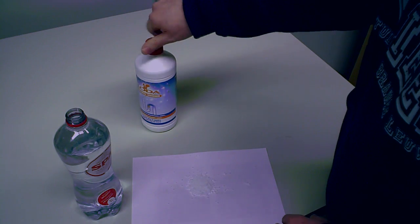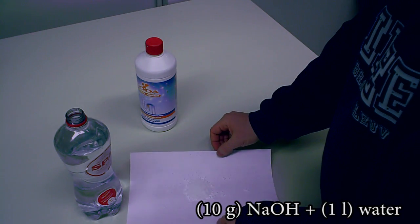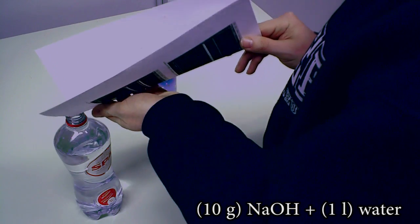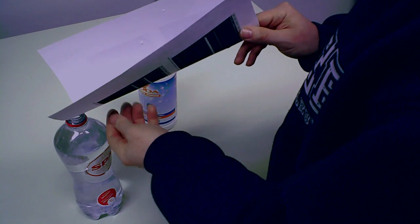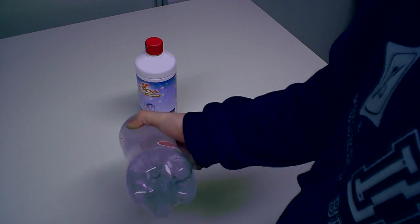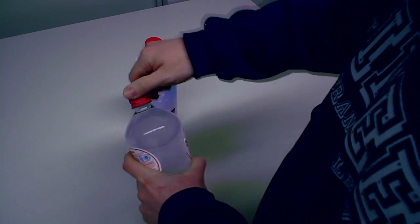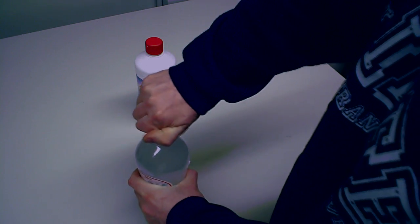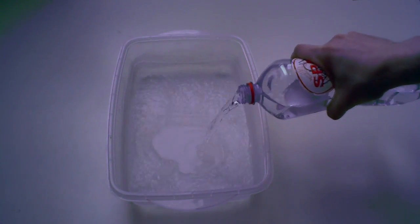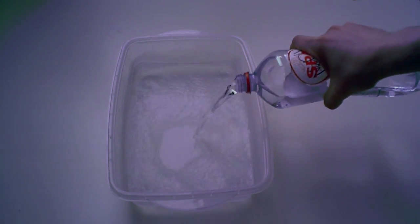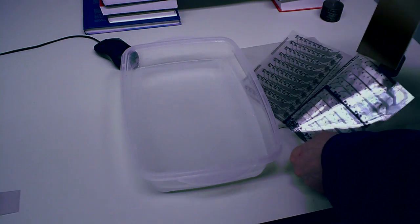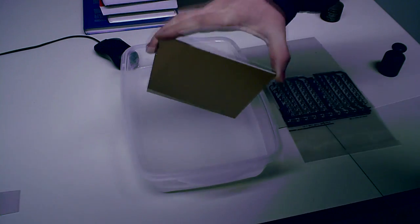For the development of PCB, I use 10 grams of sodium hydroxide for 1 liter of water. The sodium hydroxide should be added to the water, and not the other way around, to prevent any splashes. The solution is poured in a container, and after dipping the PCB in it, you should immediately see the PCB layout.